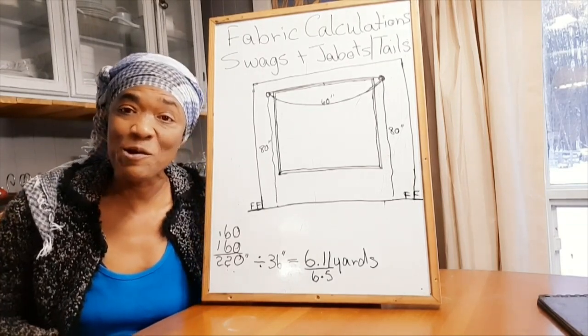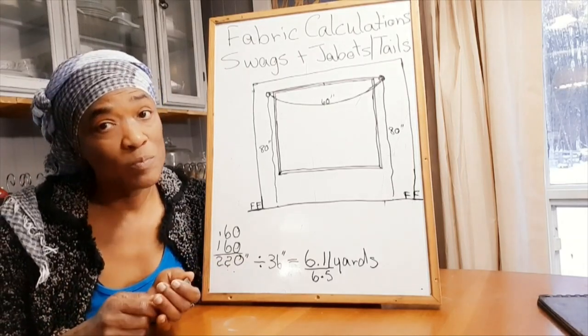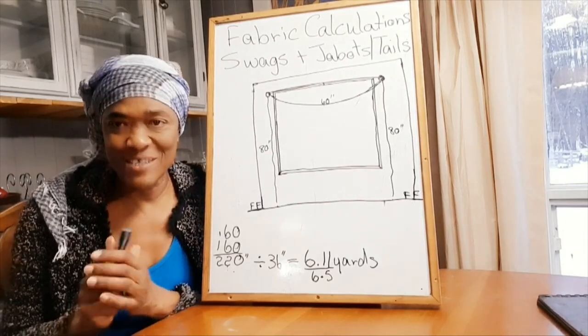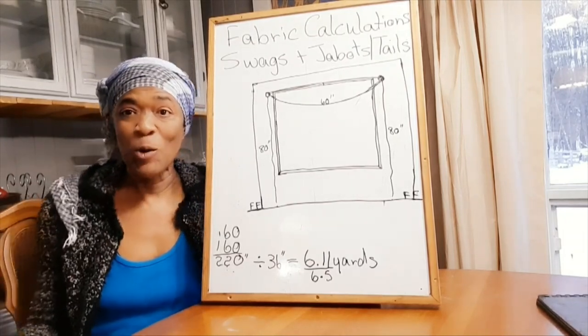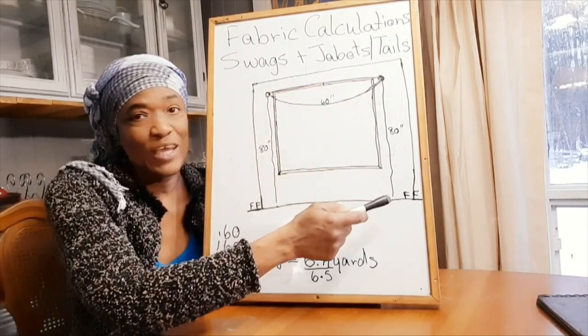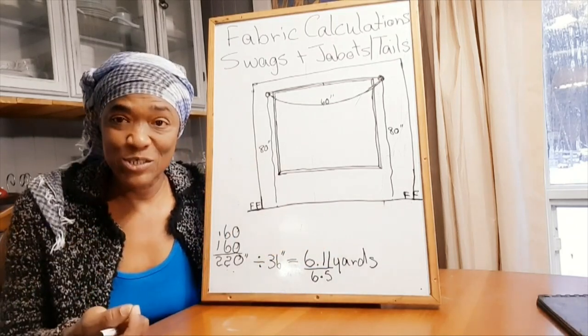The string method is by far the easiest way to go. One: install your brackets. Two: get your string and string it until you get your desired look. Number three: measure your string and then do your calculations.